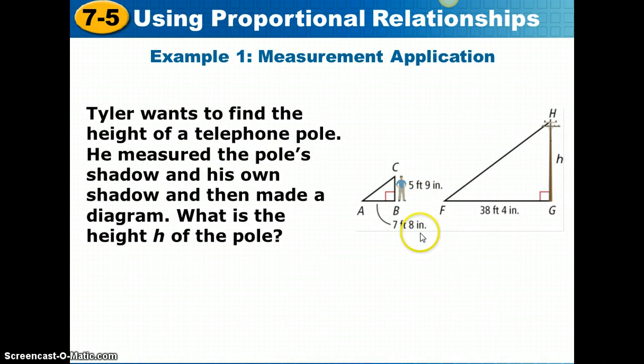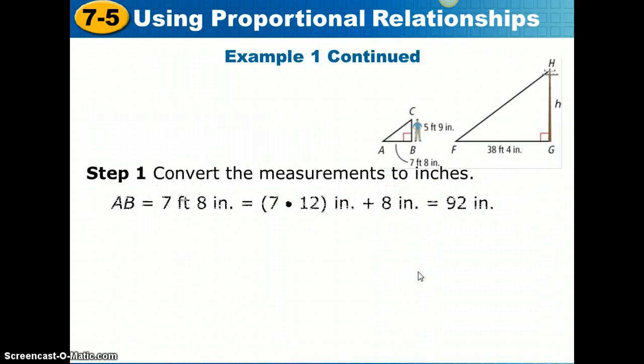Whenever dimensions are given in both feet and inches, you must convert them to either feet or inches before doing any calculations. You'll see these measurements given here in example one are in feet and inches. The normal way we give our height measurement is with feet and inches rather than 5.75 feet, we would say 5 feet 9 inches. Tyler wants to find the height of a telephone pole. He measured the pole's shadow and his own shadow and then made a diagram. Let's look at the diagram. We have Tyler that is 5 feet 9 inches and his shadow length that is 7 feet 8 inches. The pole casts a shadow that's 38 feet 4 inches. We need to find h, the height of the pole. First, we need to have all of these converted into either just feet or just inches.